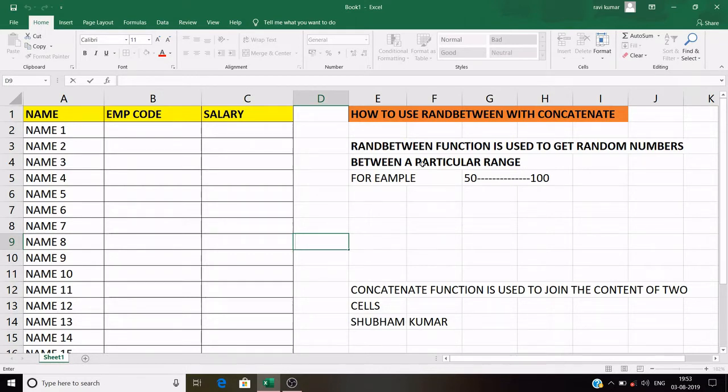RANDBETWEEN function is used to get random numbers between a particular range. For example, I want a random number between 50 to 100. This is our range. I want to get any number like 51, 65 between this range.